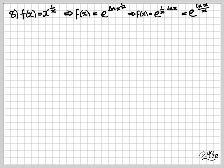For the first part of the problem, we're given that f of x is equal to x to the power of 1 over x, and we need to differentiate this.